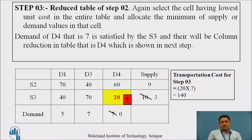This is the row reduction table of step 2. Again, select the cell with the lowest unit cost. The lowest unit cost is 20, lying at destination D4 and source S3. The demand is 7 and S3 availability is 10, so D4's remaining demand is fully satisfied and S3 has 3 units remaining. As D4 is satisfied, there is a column reduction, seen in the next step.